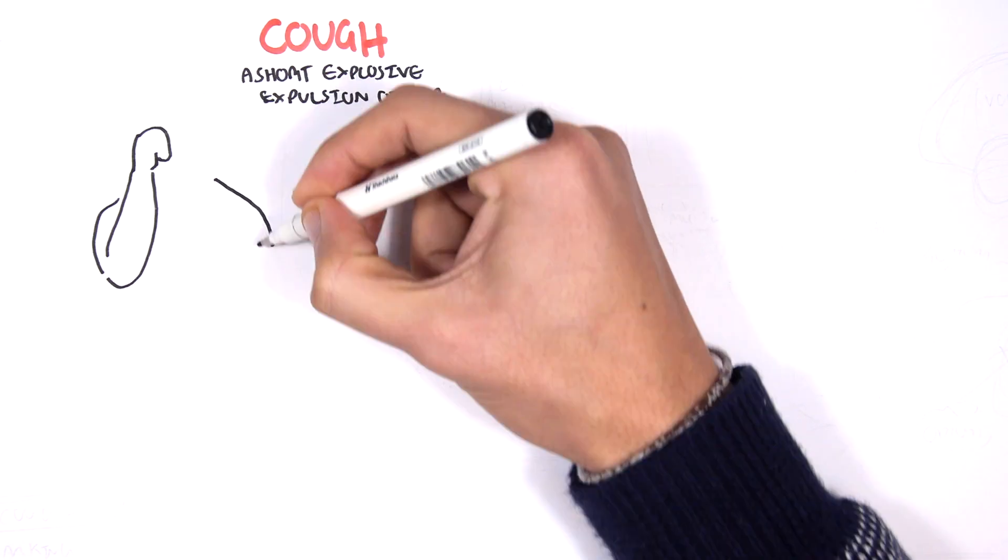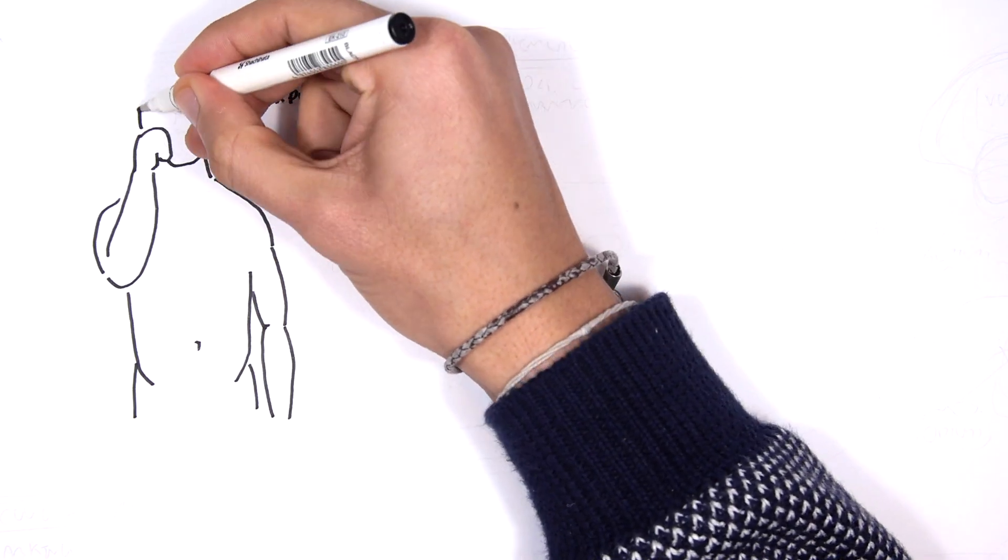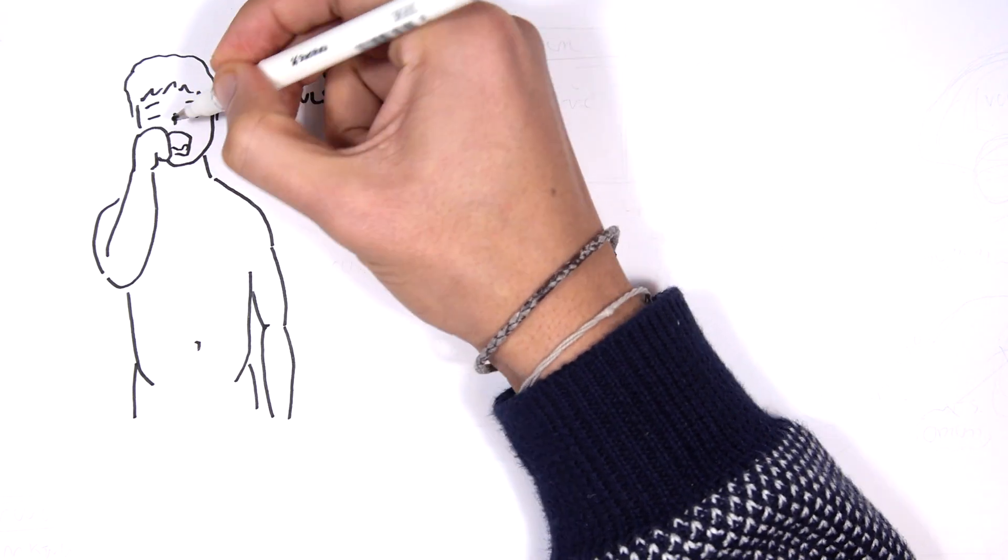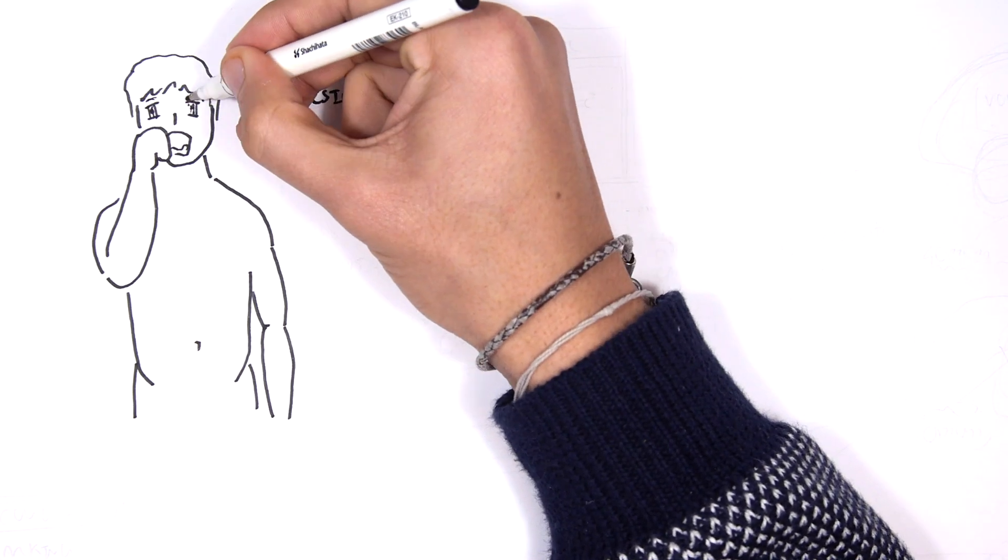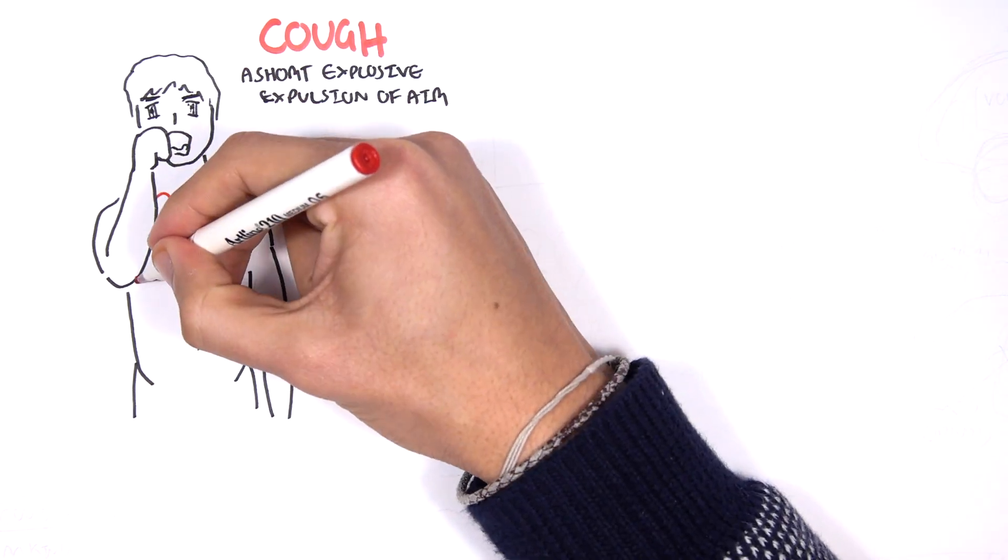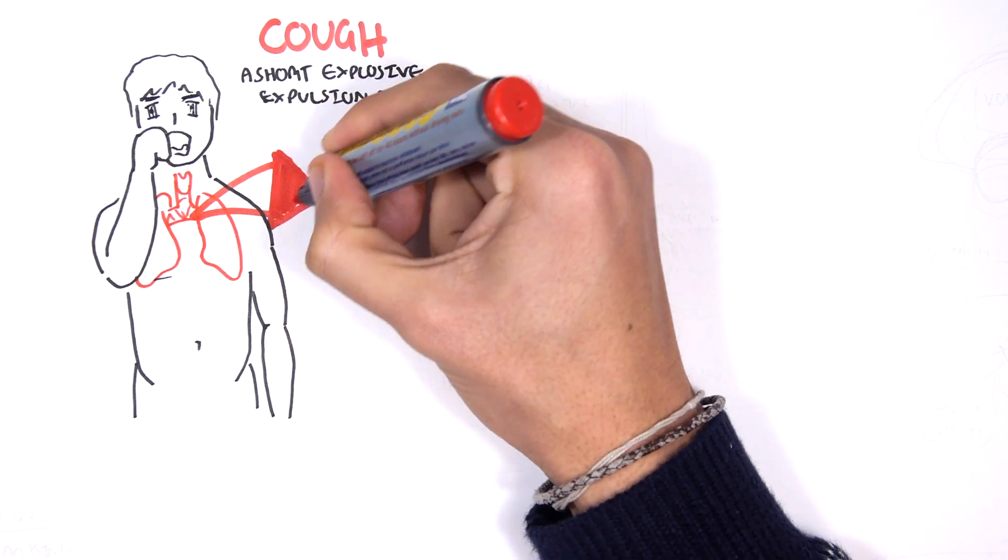So here we have a person coughing. When we talk about the physiology of coughing, we have to talk about the lungs, the respiratory tract, and the muscles of respiration. So let's zoom into the trachea bronchi area here and revise our anatomy of the area.